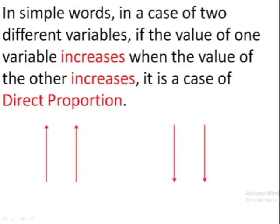Let's see, in simple words, in a case of two variables, if the value of one variable increases when the value of the other one increases, it means both are going in the same direction and increase. This is the case of a direct proportion.